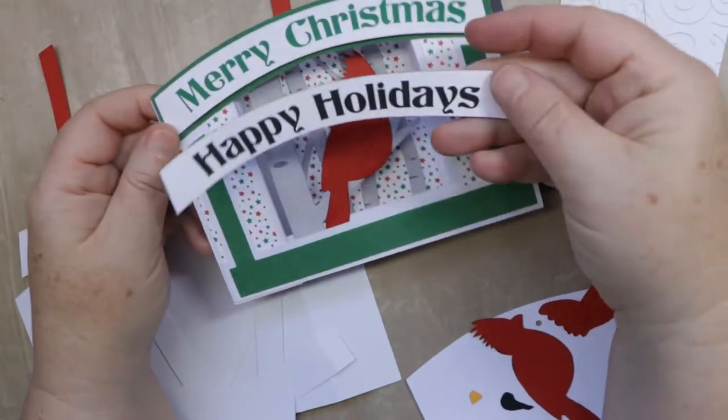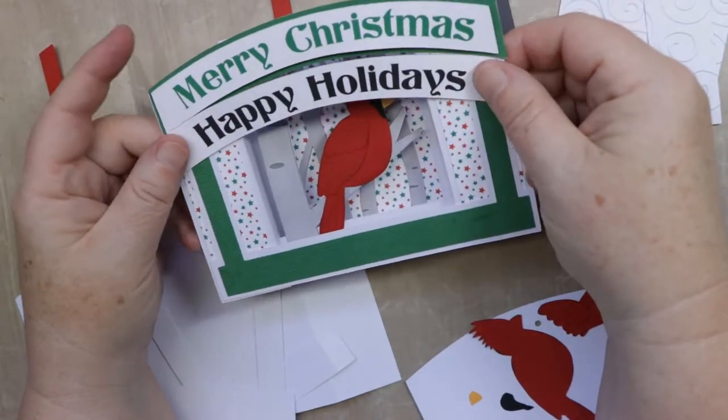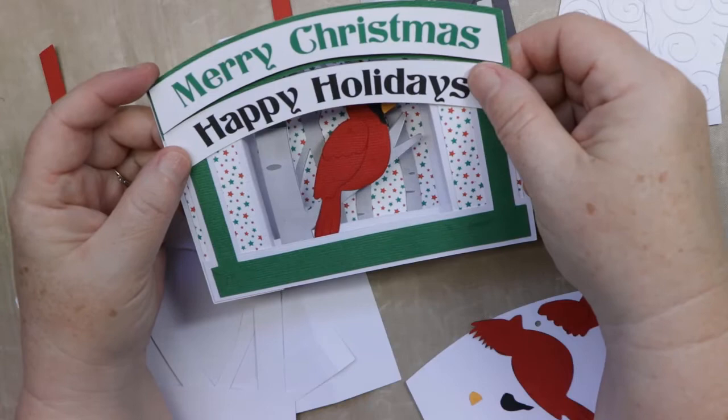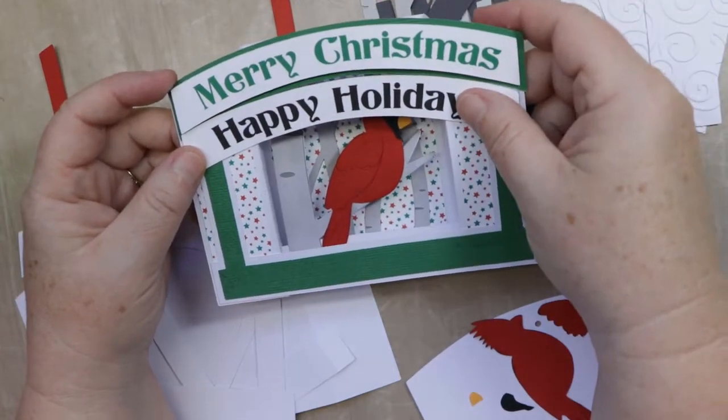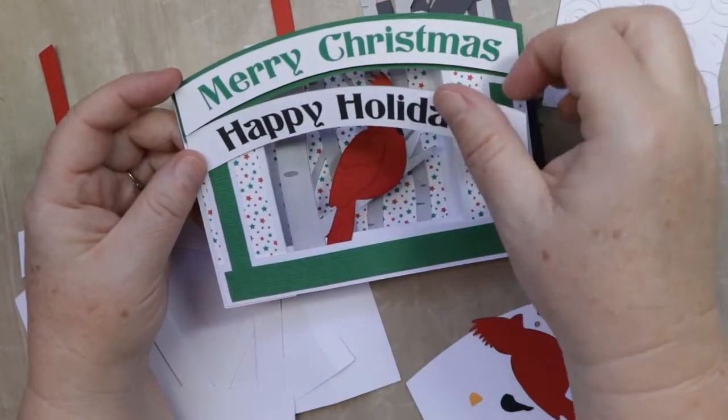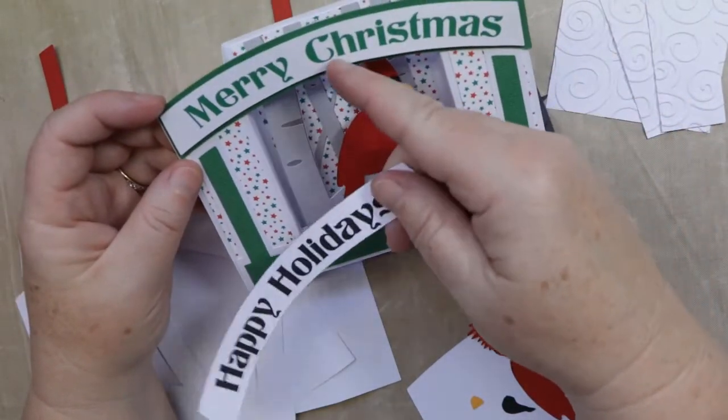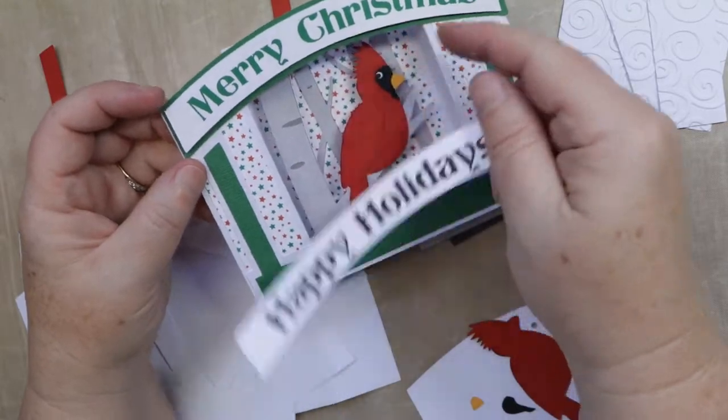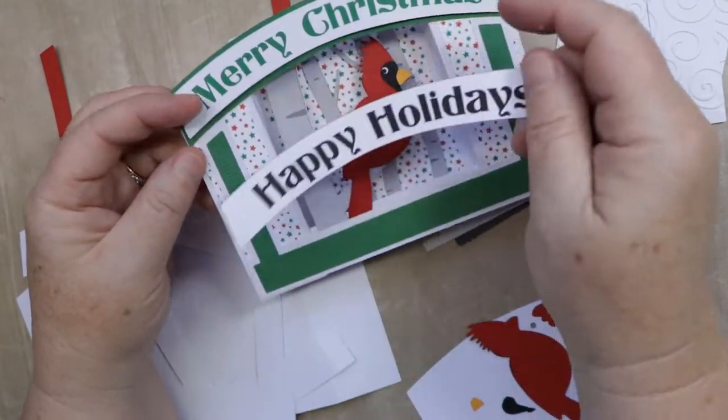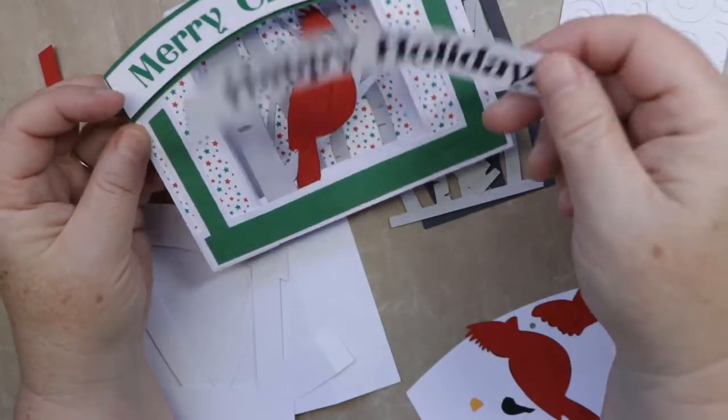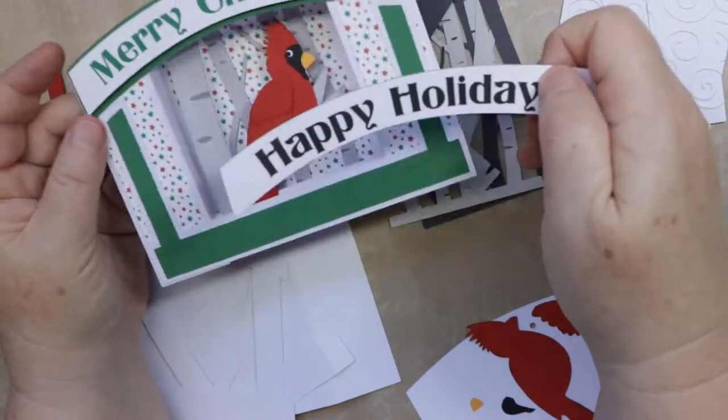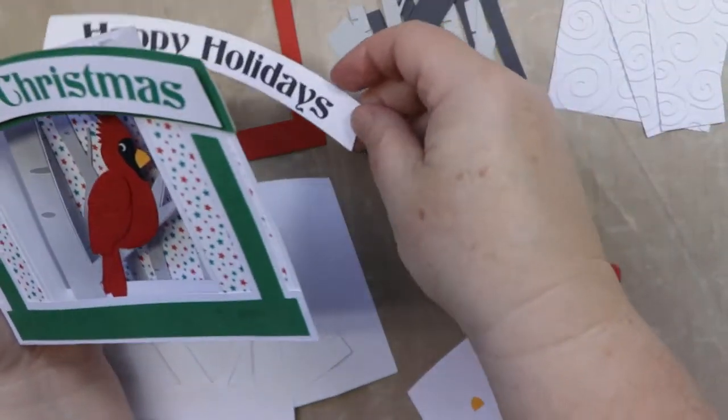So we have these, and we also have a blank one included with the file. In the default file there's a blank one, and you can use the tools in your software to create your own little sentiment up here. Or you could just omit it and just keep it the green part and then put a sentiment here. So it's up to you what you want to do, but we're going to use the Happy Holidays on the card that we're making.